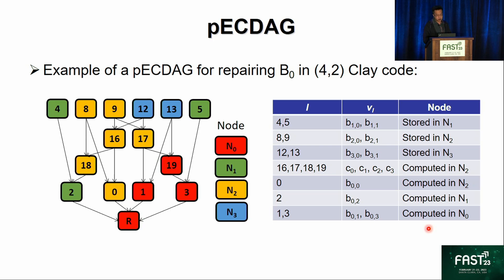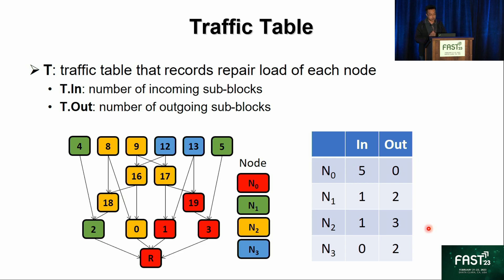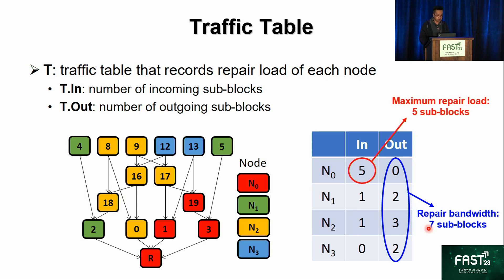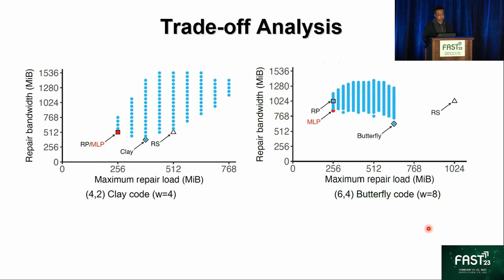For example, a PECDAC to repair B0 in the 4-2 Clay code is formulated based on the Clay code repair operation. When an edge connects two nodes of different colors, it means the sub-block must be transmitted from one node to another. Based on this colored PECDAC, we construct a traffic table T that records the repair load for each node for different repair operations. The table has two columns: T.in representing incoming sub-blocks and T.out representing outgoing sub-blocks. The sum of one column gives the repair bandwidth — seven sub-blocks in this case — and the maximum entry gives the maximum repair load — five sub-blocks.